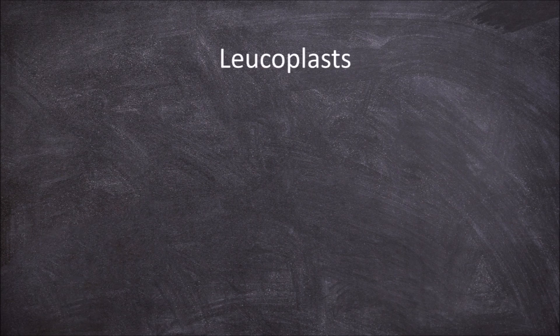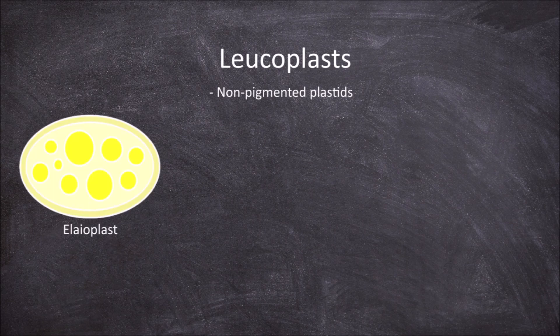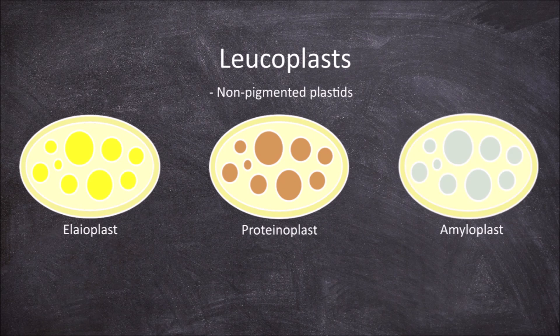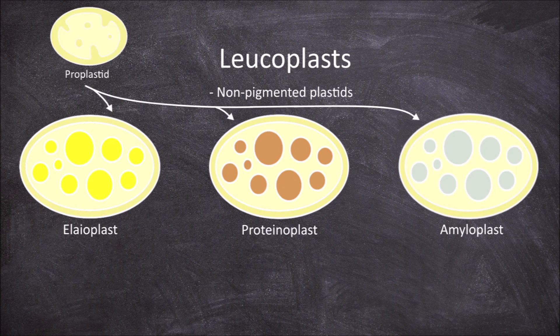The next plastids are a group collectively called leukoplasts. Leukoplasts are a group of plastids that are all non-pigmented. They are found in areas such as roots and seeds that do not need or have pigmentation. There are three main specialised forms of leukoplasts: elaioplasts, proteinoplasts, and amyloplasts. These are all formed from proplastids.